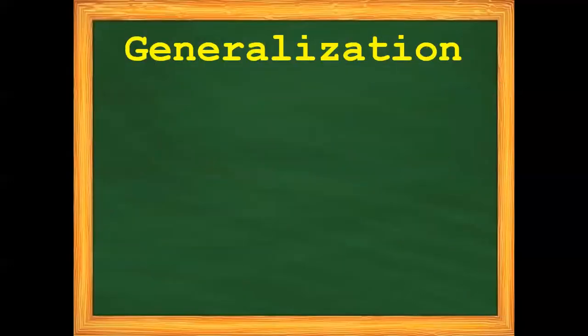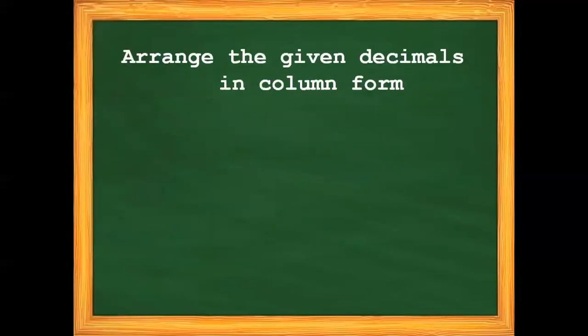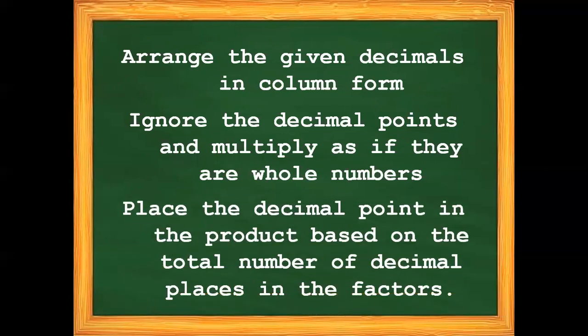Always remember how we multiply decimals and mixed decimals with factors up to 2 decimal places. Step 1: Arrange the given decimals in column form. Step 2: Ignore the decimal points and multiply as if they are whole numbers. Step 3: Place the decimal point in the product based on the total number of decimal places in the factors.